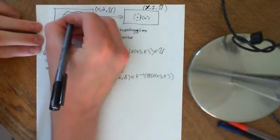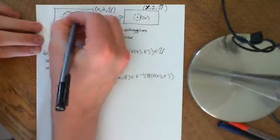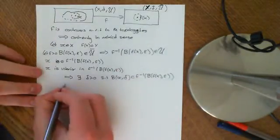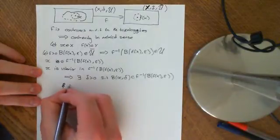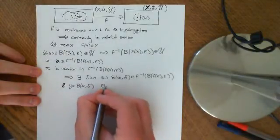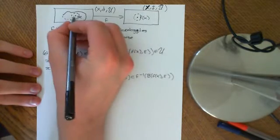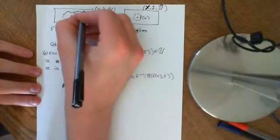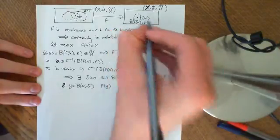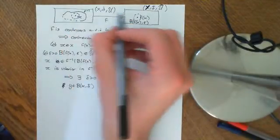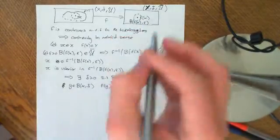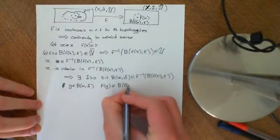That implies there must exist a little delta greater than zero such that the open ball centered around x of radius delta is completely contained within f-inverse of the open ball centered around f(x) of radius epsilon. So if I take any point y which is an element of the open ball centered at x of radius delta, then y is certainly in f-inverse of that ball, and therefore f(y) is going to be mapped within the open ball centered at f(x) of radius epsilon.